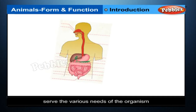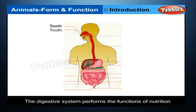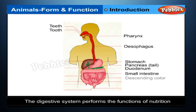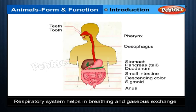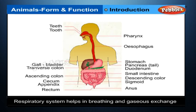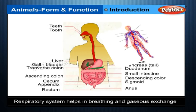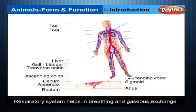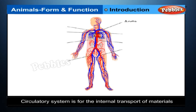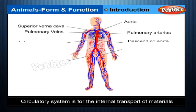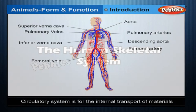For example, the digestive system performs the functions of nutrition, the respiratory system helps in breathing and gaseous exchange, and the circulatory system is for the internal transport of materials.